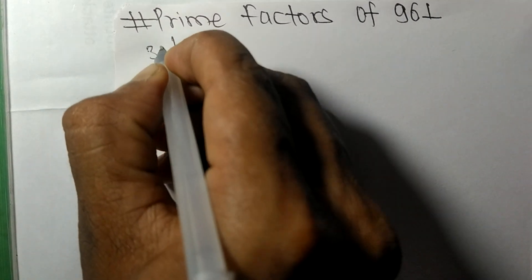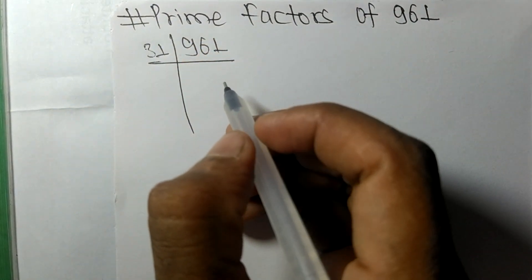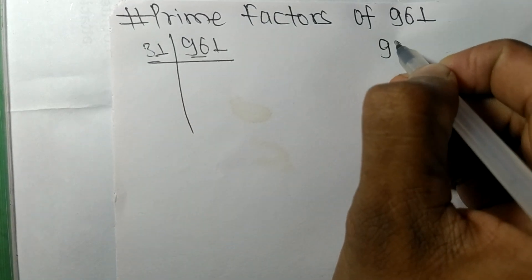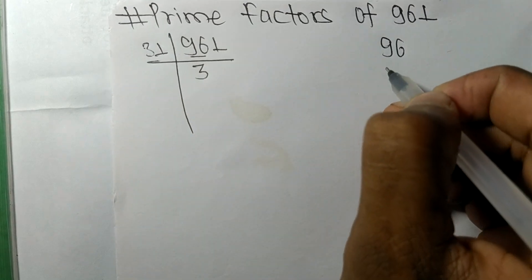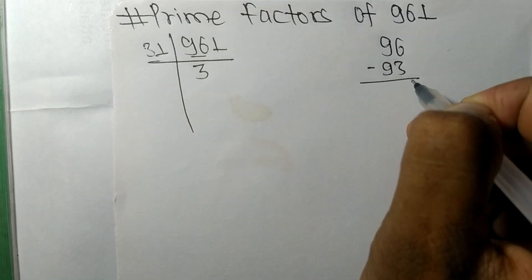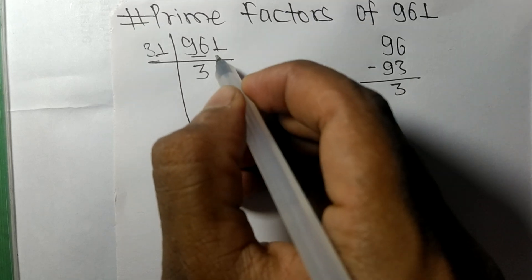First we have 96. So 31 times 3 means 93. On subtracting we get 3, and this one 31.